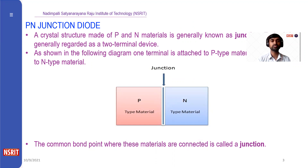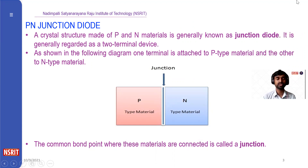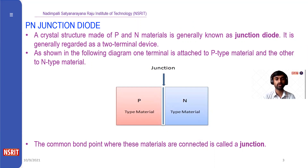A p-n junction diode is simply formed by combining p-type material and n-type material together. When you combine them, a junction is formed — which is the connecting point between the p-type and n-type material. Joining these two materials together forms a junction diode, commonly known as a p-n junction diode.